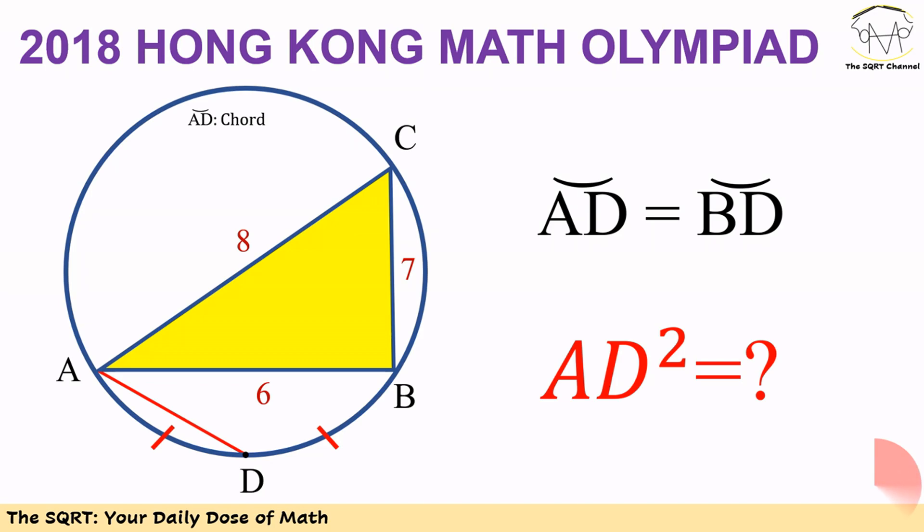7, 8, and 6. We also know that we have two equal chords AD and BD. We want to find AD squared. Before moving forward to discuss the solution, make sure to pause the video and think about the problem.